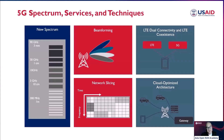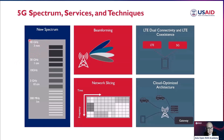Let's discuss some 5G spectrum services and techniques. 5G is the first mobile technology that operates on a much higher frequency band compared to previous wireless technologies — with frequencies up to one gigahertz before, and currently in the 3GPP specification up to 80 gigahertz and down to 450 megahertz.